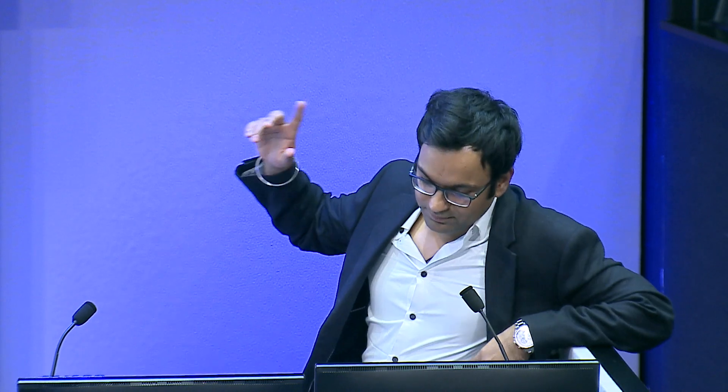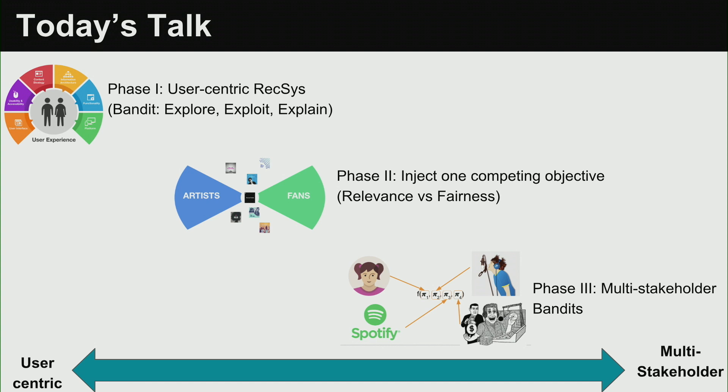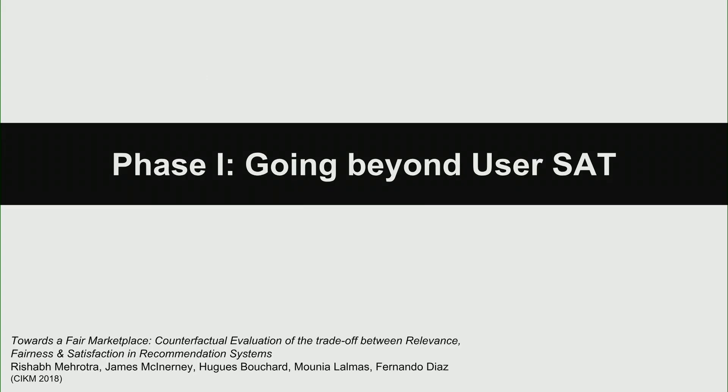When you start thinking about marketplaces and multiple stakeholders, we're going to talk about what kinds of multi-stakeholder models we can investigate. In phase one we covered user-centric recommendations and bandits. In part two we're going to inject one competing objective — fairness — present some initial results, and then focus more on the multi-stakeholder models, going beyond user satisfaction.